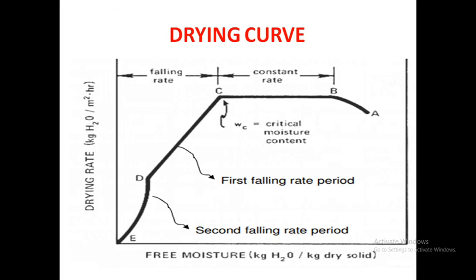At this point, the point C, is not enough water on the surface to maintain a water activity value of 1. The falling rate period can be divided into two steps. One is first falling rate period. Second one, second falling rate period.